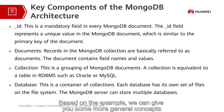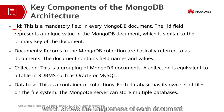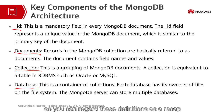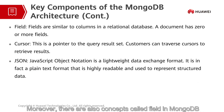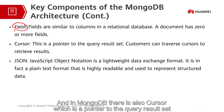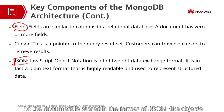Based on the example, we can introduce some more general concepts. The underscore ID is the mandatory field in every MongoDB document, which shows the uniqueness of each document. The concepts of document, collection, and database have been introduced before, so you can regard these definitions as a recap. Moreover, there is also a concept called field in MongoDB, which is similar to columns in a relational database. In MongoDB there is also a cursor, which is a pointer to the query result set. Finally, MongoDB uses JSON objects as the foundation of data models, so documents are stored in the format of JSON-like objects.